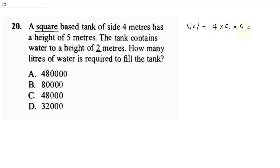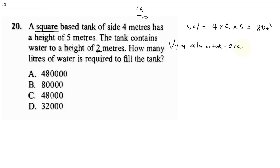4 times 4 times 5 equals 16 times 5, which gives 80 cubic meters. The volume of water already in the tank — since it contains water up to 2 meters height — is 4 times 4 times 2, which equals 16 times 2, giving 32 cubic meters.